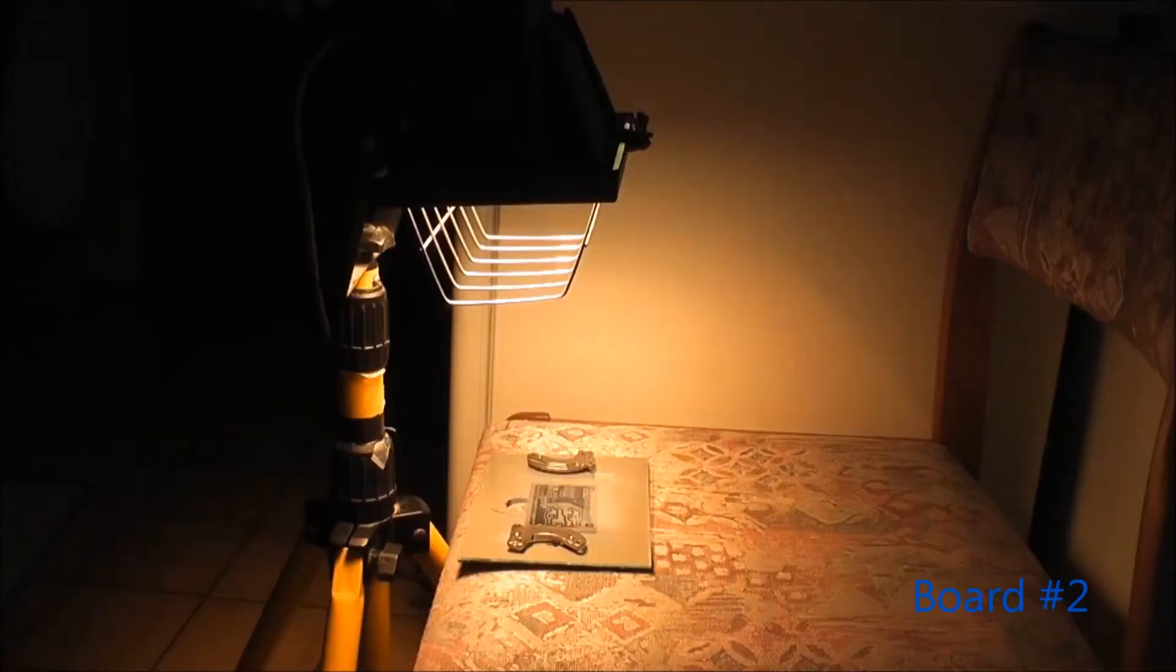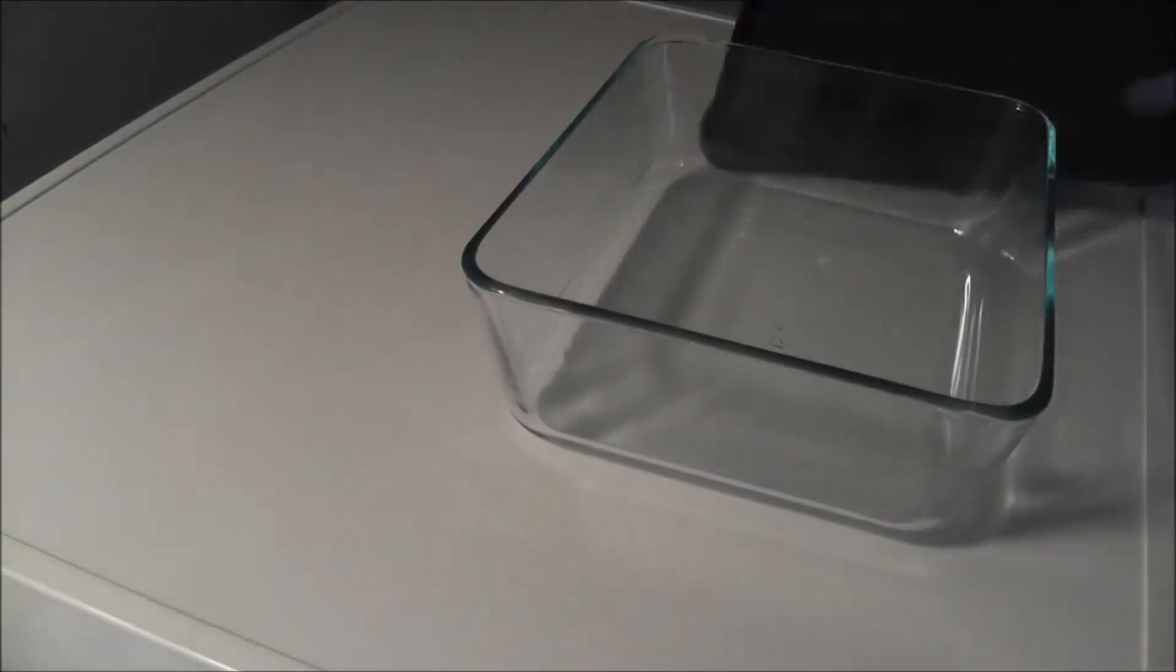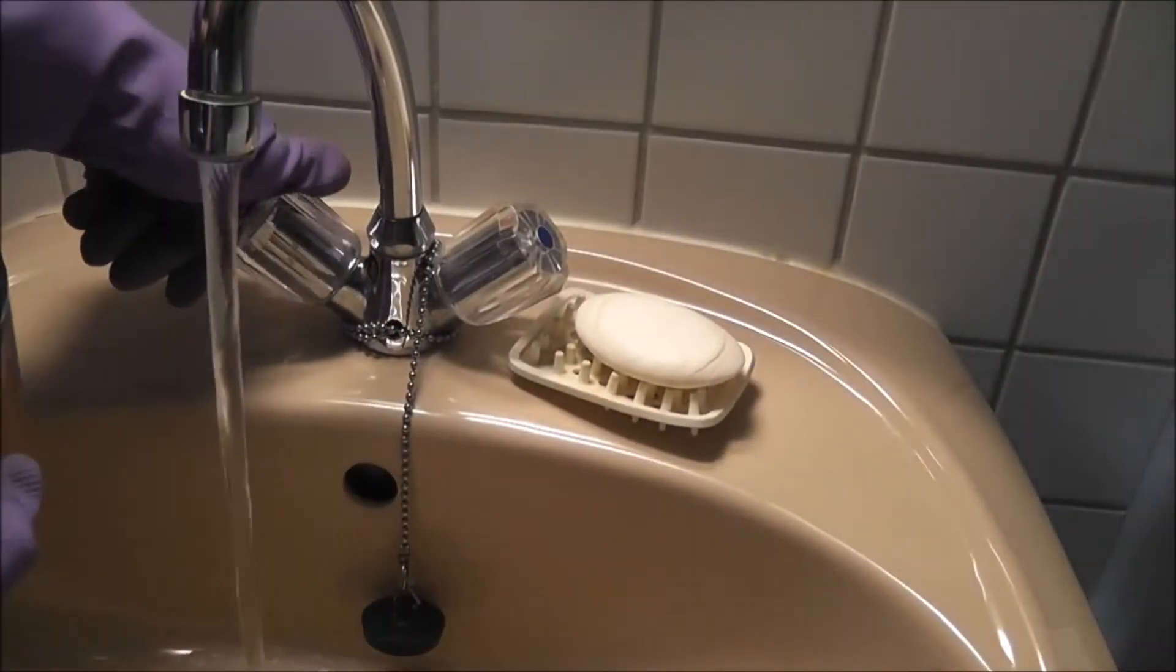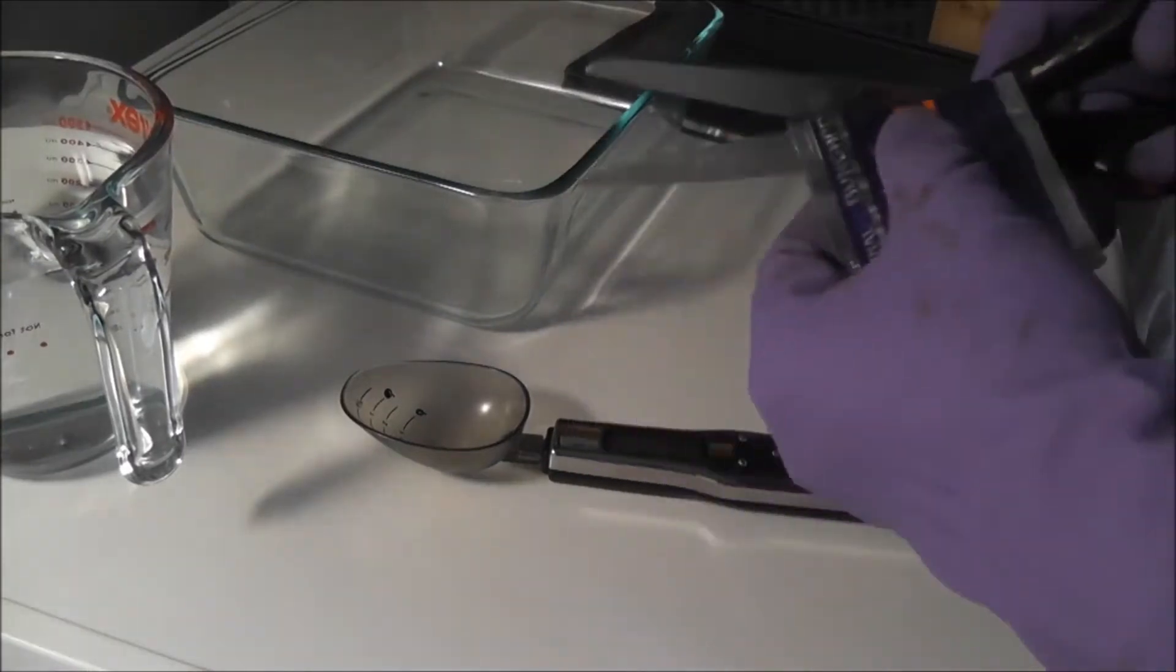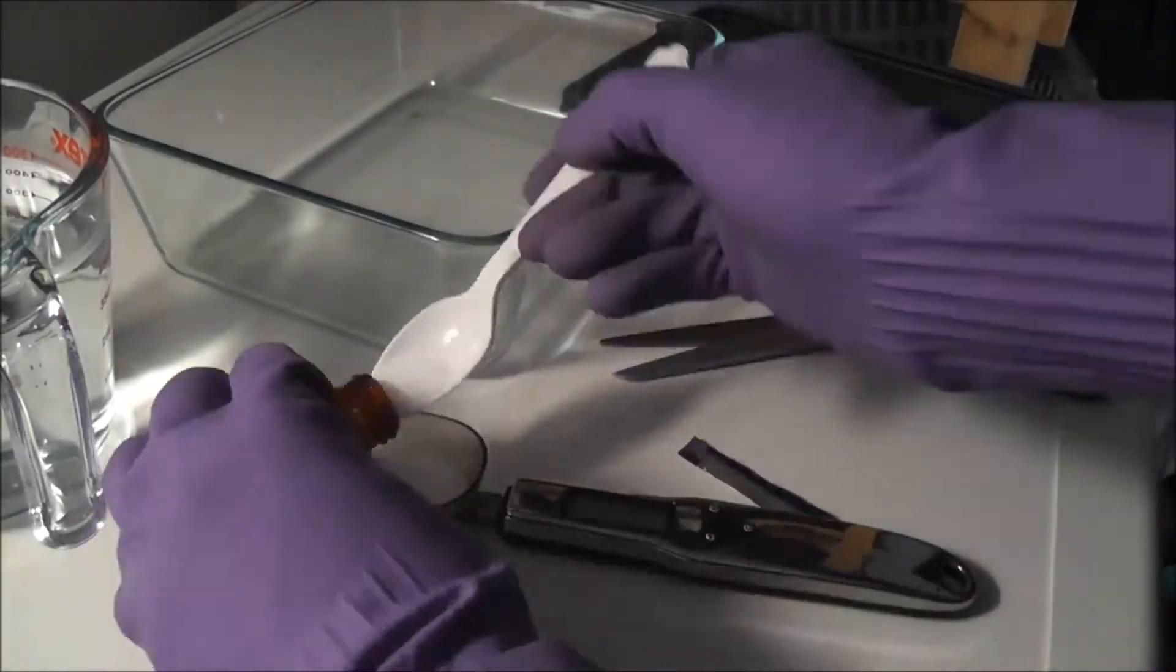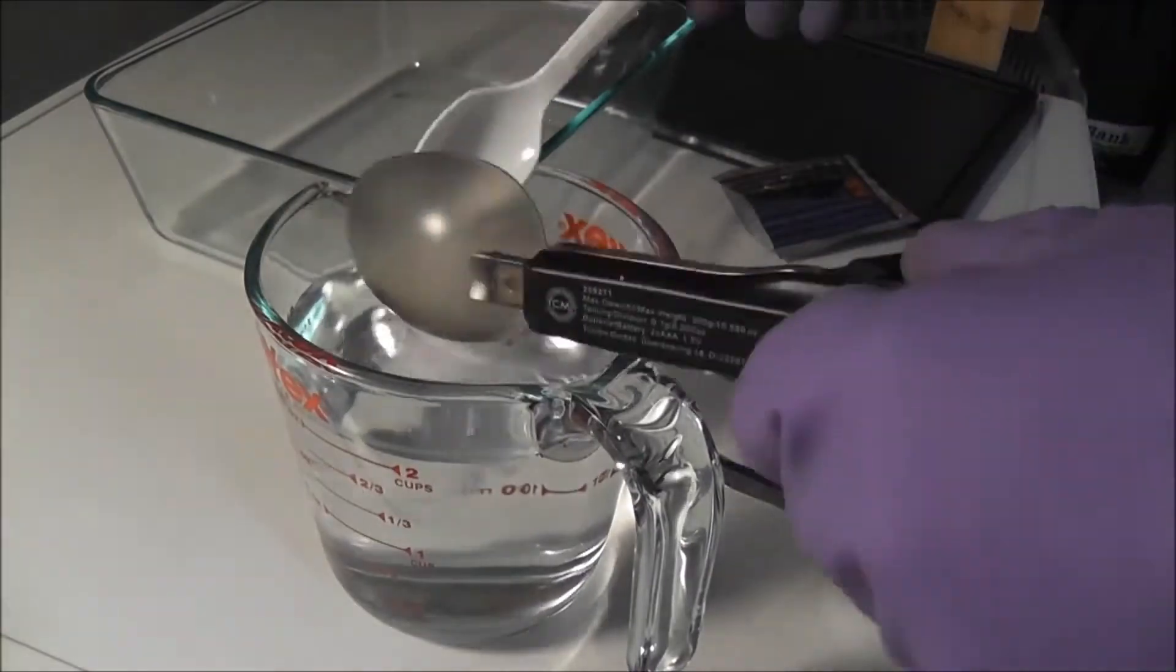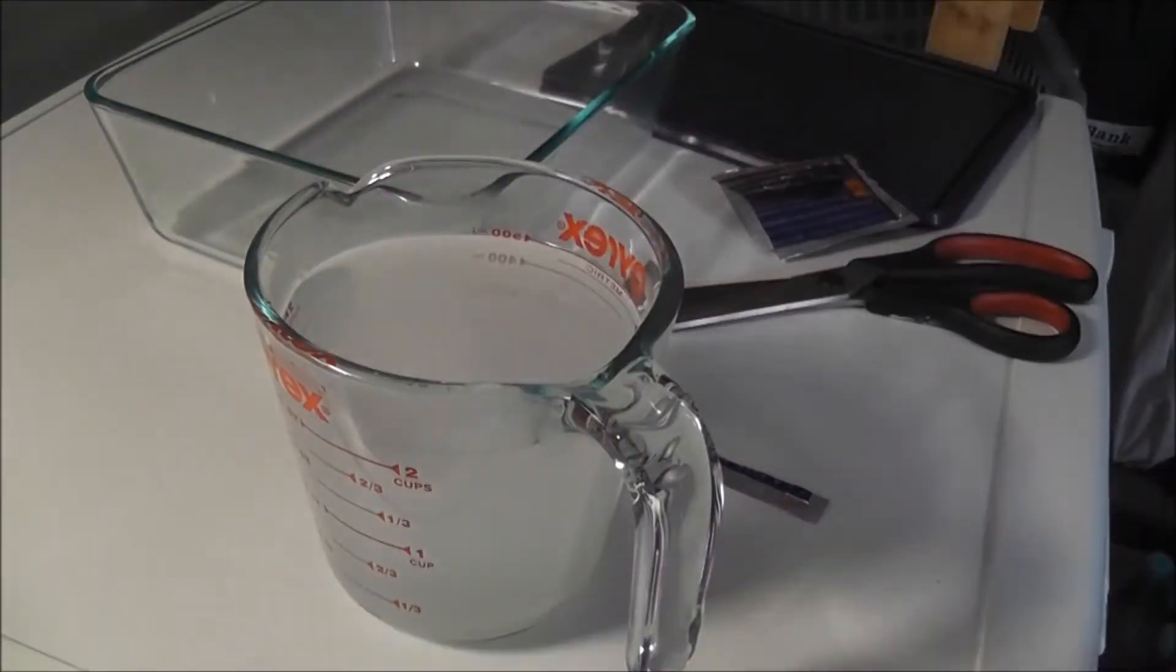I repeated these steps for my second board. The next step is to develop your board. To do this, read the instructions that came with your developer and mix the solution accordingly. With my developer, it's said to dissolve one pack of developer in one liter of lukewarm water, or half a pack in half a liter of water. Pure sodium hydroxide can also be used, but I don't recommend it as I've had bad experiences with it in the past.